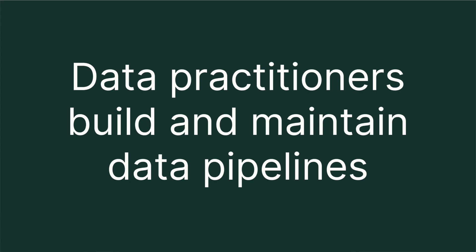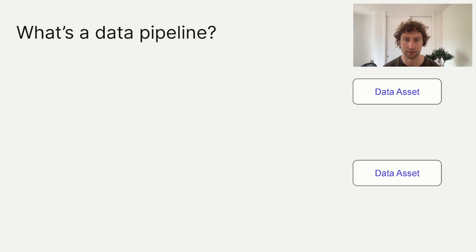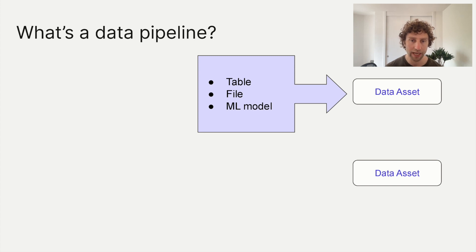What is a data pipeline? A data pipeline normally culminates in a set of data assets. A data asset is a file, a machine learning model, a table — any persistent object that captures some understanding of the world. The point of a data pipeline is to construct or update data assets that can be used to help make a business decision or power an application.